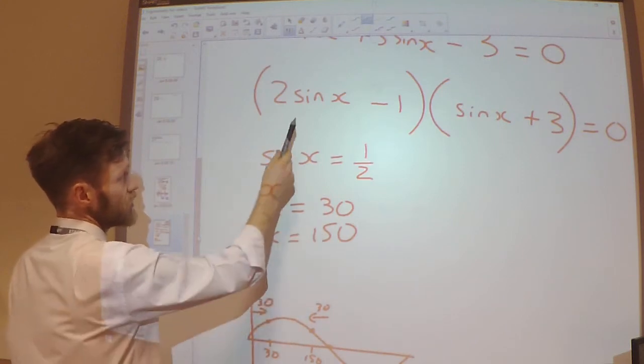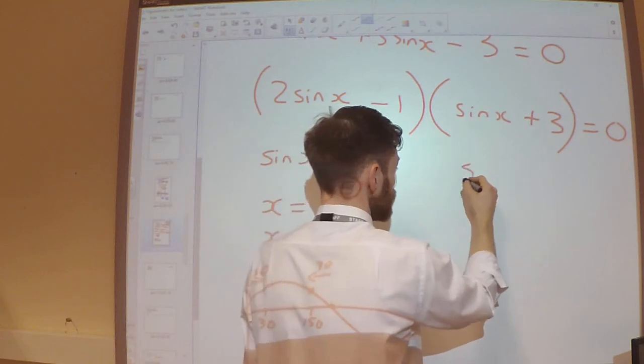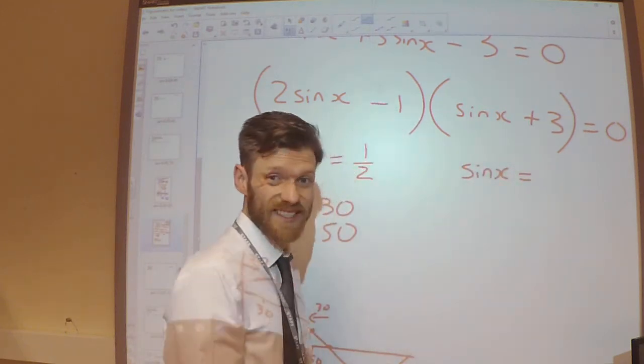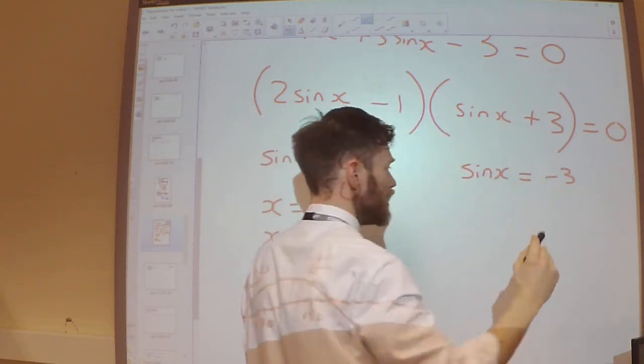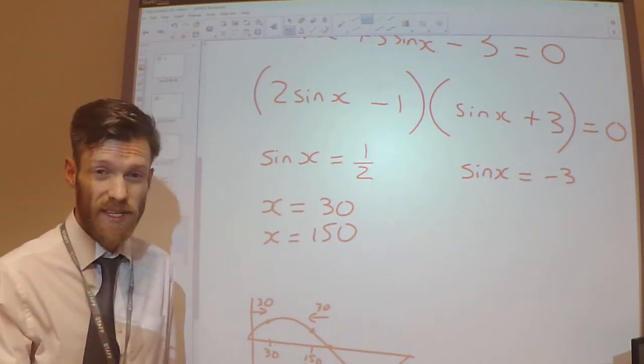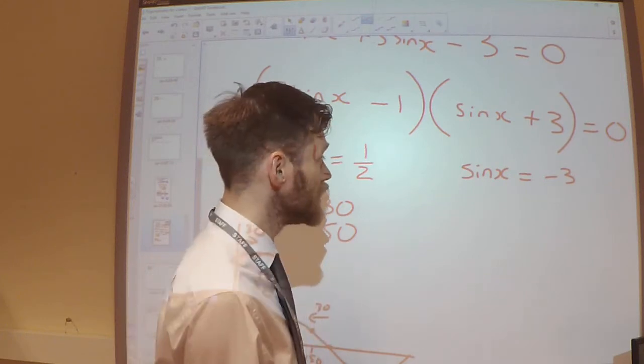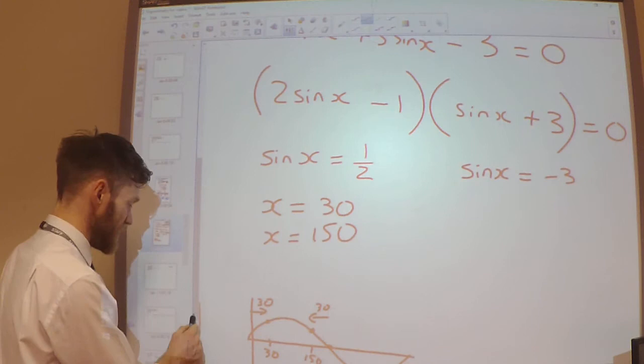So these are my two solutions from that bracket. Over here, in order for this to equal 0, sin x would need to equal minus 3. Now, if you did try to work that out in your calculator, it would tell you a maths error. And the reason for that, let's just have a look at our sine graph.